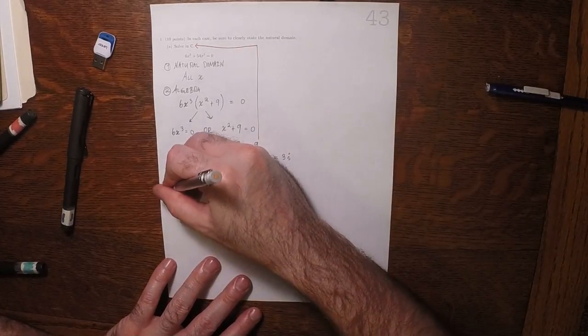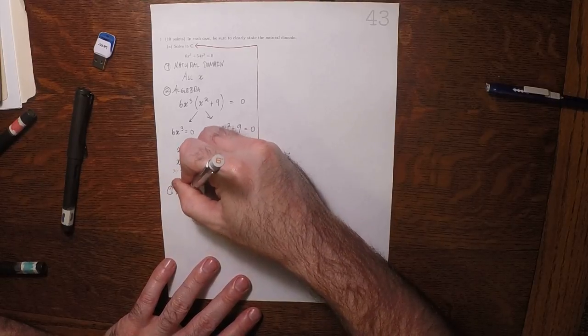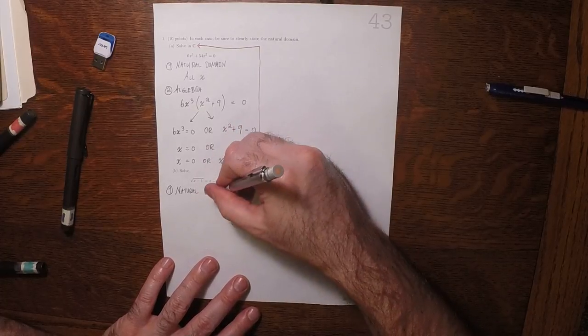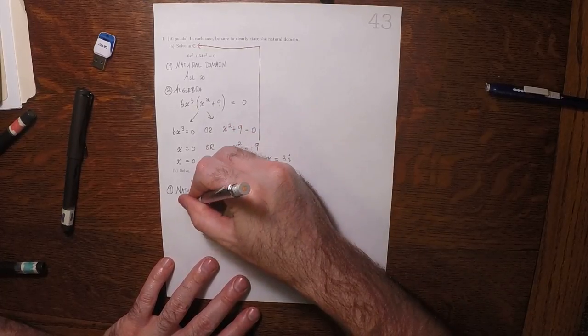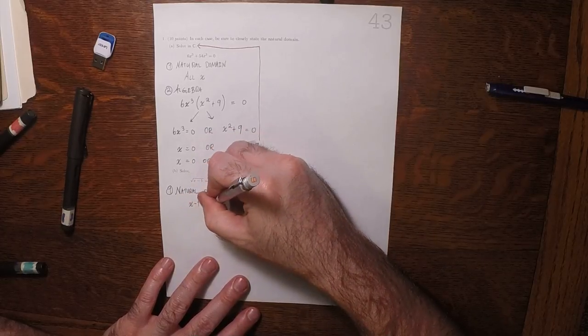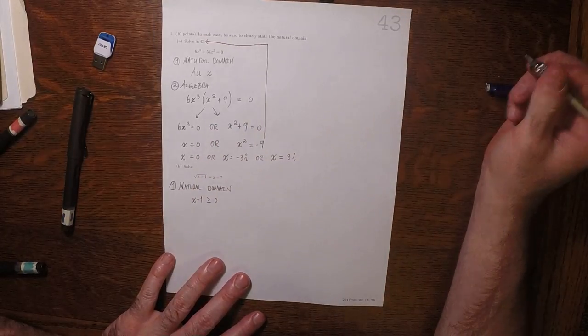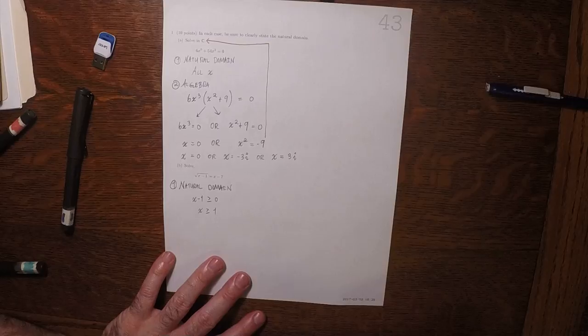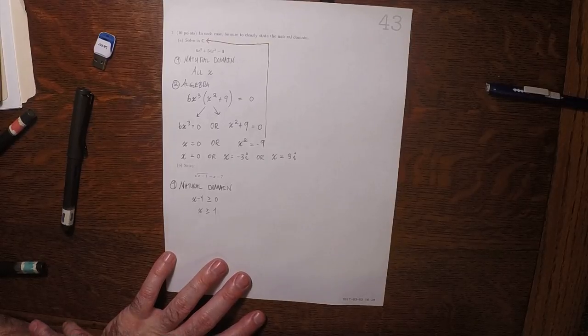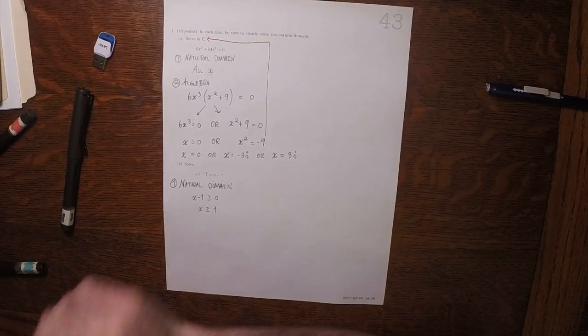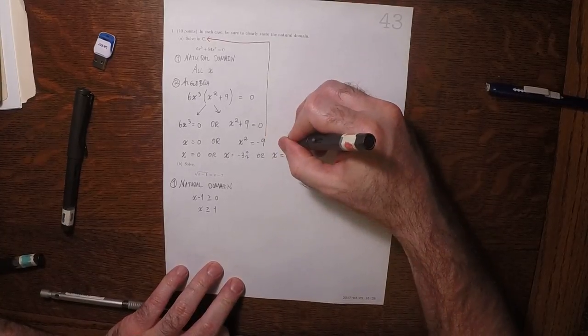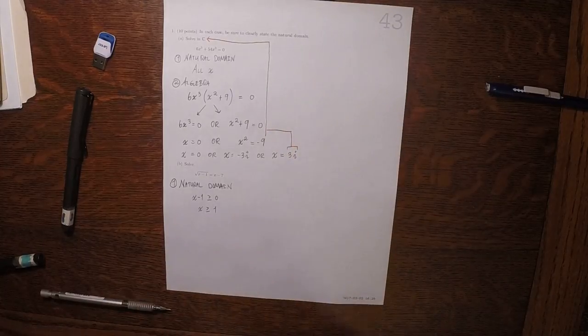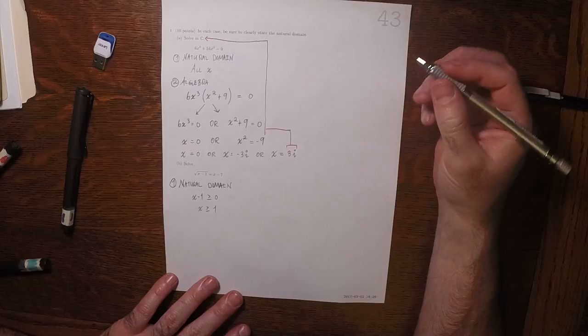For this one, the natural domain—well, we need the argument to the radical to be non-negative, so it must be the case that x is greater than or equal to 1. Let's make this clear: x is greater than or equal to 1.